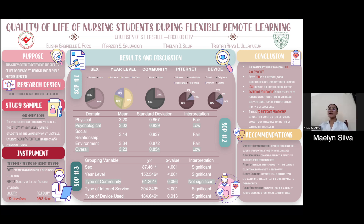For the statement of the problem, the study aims to determine the quality of life of nursing students during online learning. The specific queries the study aims to answer are: first, what is the demographic profile of nursing students according to sex, year level, type of community, type of internet service, and type of device used? Second, what is the level of quality of life of nursing students according to physical, psychological, social, and environmental domains? Third, is there a significant relationship between the level of quality of life of nursing students and their profile variables?